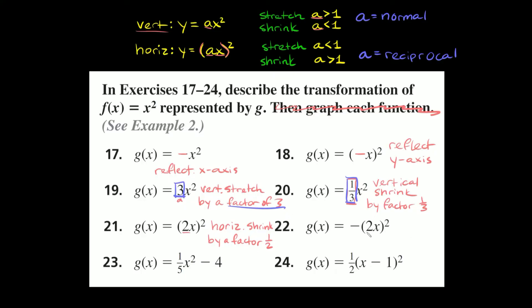Problem 22: g of x equals negative, in parentheses, 2x squared. We have parentheses, so it's horizontal. The number 2 is bigger than 1, so for horizontal that means it's a shrink by a factor of one-half — the reciprocal of 2. We also have a negative sign out in front, not inside the parentheses, so there's a reflection over the x-axis. So: horizontal shrink by a factor of one-half, and reflecting over the x-axis.